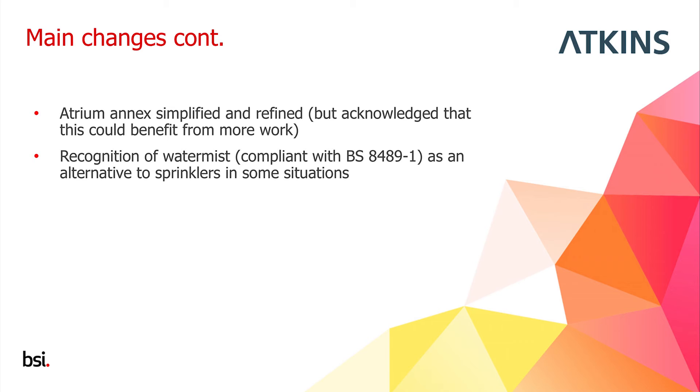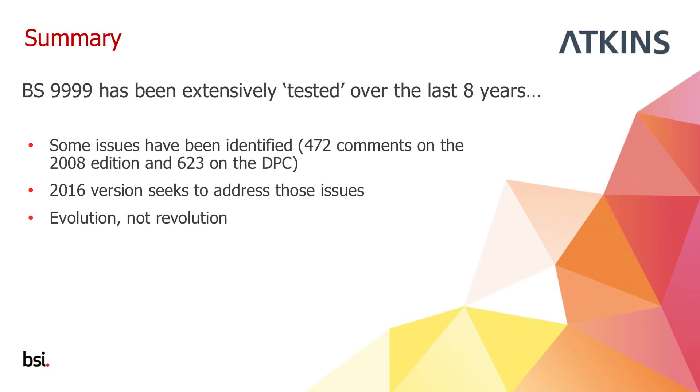Water mist has now been recognised as an alternative to sprinklers in BS9999. Fitting sprinklers in a building gives certain design freedoms by altering the risk profile. In the 2008 version it was suggested that other suppression technologies might give equivalent benefit but required proof. Now that British Standards exist describing what a good water mist system looks like for both domestic and non-domestic premises, the standard states that in certain respects a water mist system provides the same benefit as sprinklers.